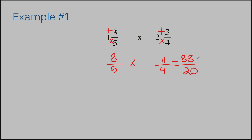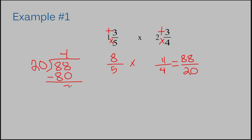Now I need to divide here to get a mixed number because right now my numerator is larger than my denominator. So I'm going to divide twenty into eighty-eight. Twenty goes into eighty-eight four times, which is eighty. Now I subtract and I get eight. The way you write your answer is in the order that you got your numbers. You wrote down the four first and it becomes your whole number.